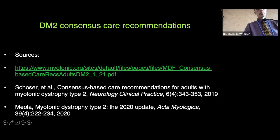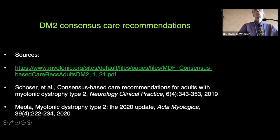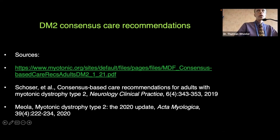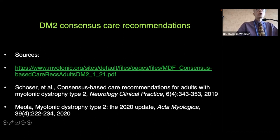Q (virtual): Are you checking resident T cell types and local and systemic cytokines such as IL-2 and GM-CSF? A: No, not generally. That could be relevant for individual cases who have autoimmune conditions associated with DM2, but without evidence of that, we wouldn't be following those markers.